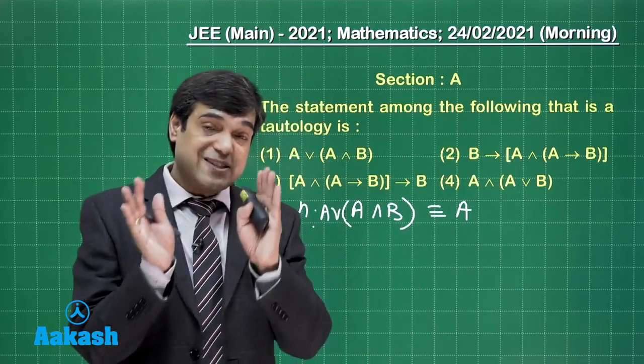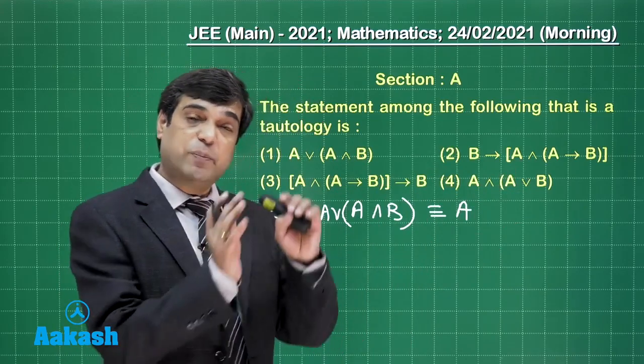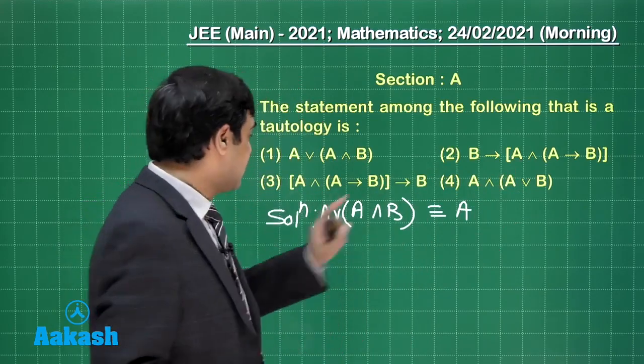Now A meaning it is dependent upon input. Input for A would be true as well as false. So it is not a tautology.